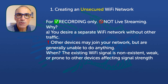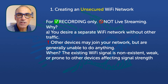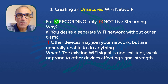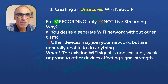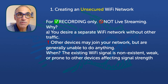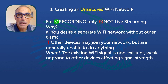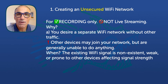Firstly, creating an unsecured network — this is for recording only. You can't live stream because an unsecured network does not give you access to the internet. The reason you might want to do this is because you want a separate Wi-Fi network — either there's no wireless network in the area, the signal is very weak, or there are too many other devices affecting signal strength. This way you can use your MacBook Pro to create a wireless network that only you and your devices are connected to, giving you great distance and a very smooth feed.